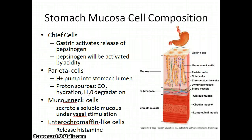The stomach lining is composed of many gastric pits. These pits are host to a variety of epithelial cells. Activated by gastrin, chief cells release pepsinogen, which is converted to pepsin, a protease. Parietal cells are responsible for pumping protons into the stomach, which are responsible for stomach acid's low pH. Mucus neck cells secrete mucus under vagal stimulation in order to protect the stomach lining from low pH.